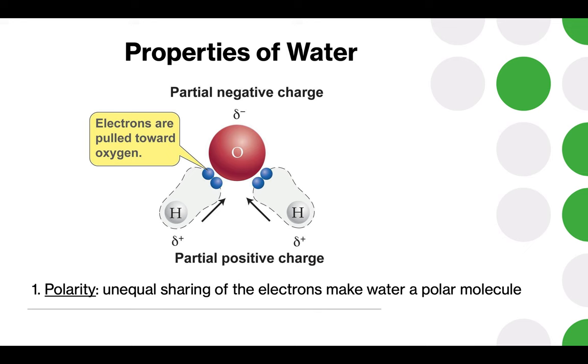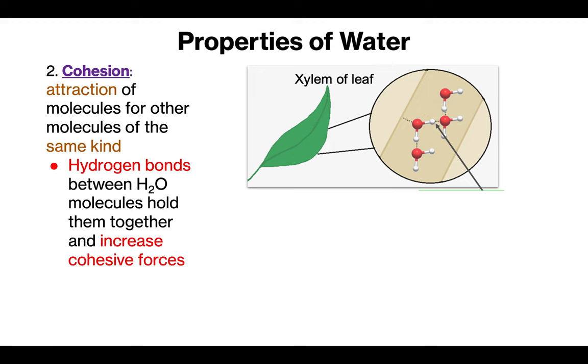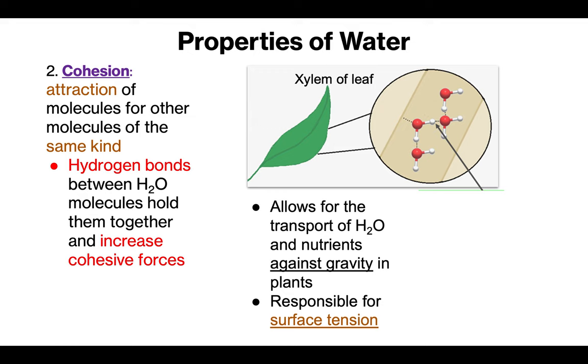This causes all sorts of cool things, including starting with cohesion. Cohesion is just water's attraction to itself. So here you can see some water molecules are interacting within the xylem, the water tubes of a leaf. You can see they are attracted to one another. That is part of the story of how the water can travel upwards through those tubes into the leaf where it needs to go. So this is water's attraction to itself. It's also responsible for surface tension.